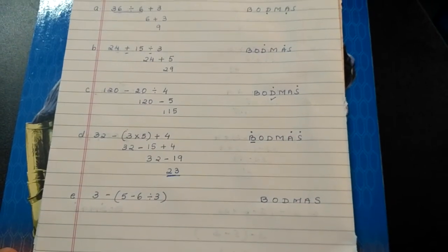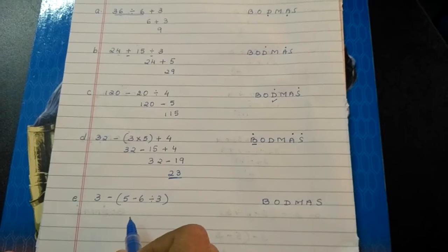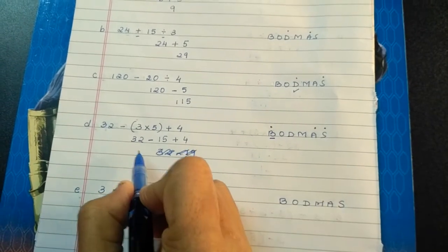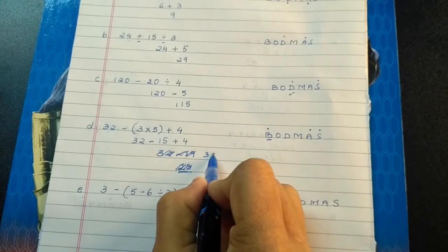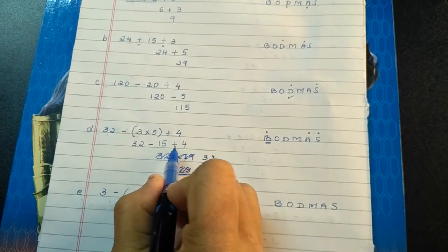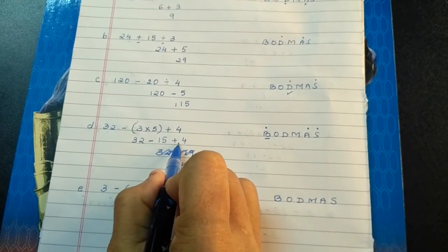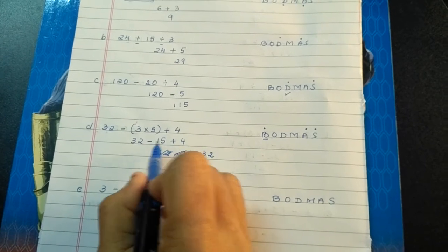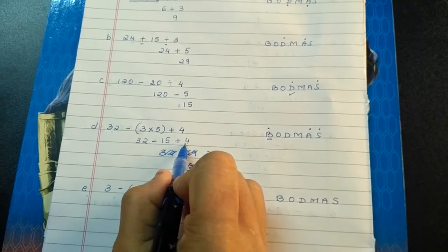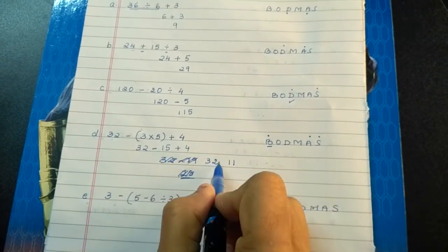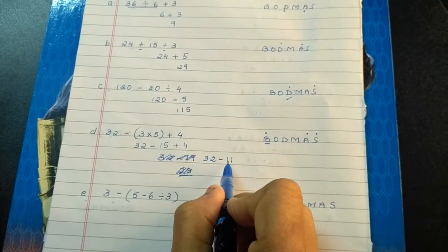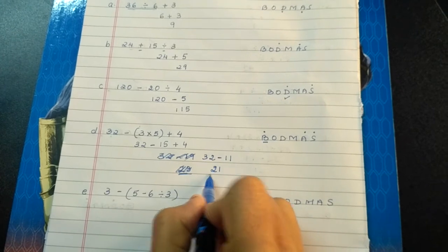So children, sorry, here 32 is there and this is minus 15 plus 4. When minus and plus, what we do? We subtract and put the sign of greater number. So 15 minus 4 is 11 and what is the greater number sign? Minus. So 32 minus 11 is 21.